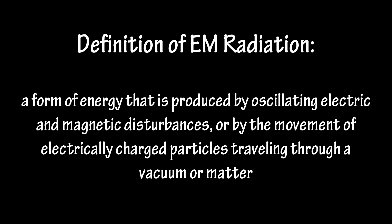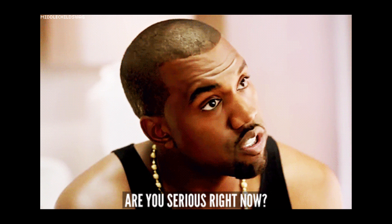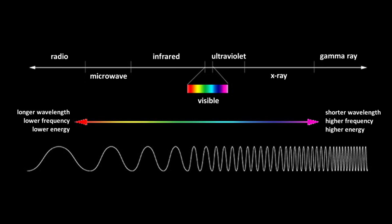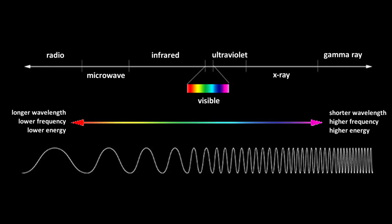Well, for starters, the definition of electromagnetic radiation is a form of energy that is produced by oscillating electric and magnetic disturbances, or by the movement of electrically charged particles traveling through a vacuum or matter. Basically, what that means is that electromagnetic radiation travels in wave pairs of electric fields and magnetic fields, and this is measured in terms of a spectrum called the electromagnetic spectrum.